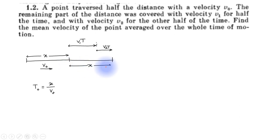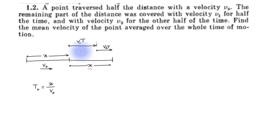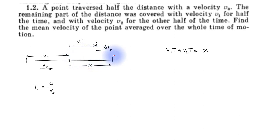Let the total time for covering the second half distance x be 2t. Out of this total time, it traveled with velocity v1 for time t and with velocity v2 for the other time t. So the total distance x covered in this part equals v1·t plus v2·t, where v1·t is the distance covered in the first half and v2·t is the distance covered in the second half.